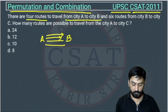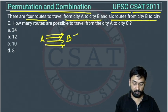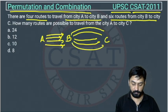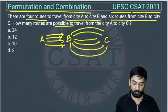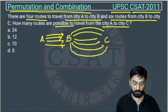There are four routes from city A to city B, and six routes from city B to city C. In this way, how many routes are possible to travel from city A to city C? So there are how many ways a person can move from city A to C?